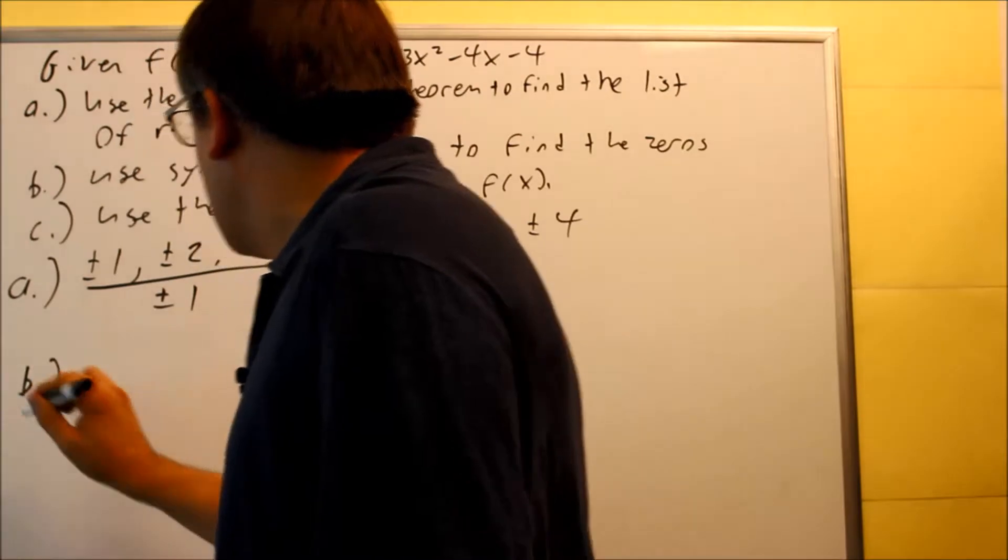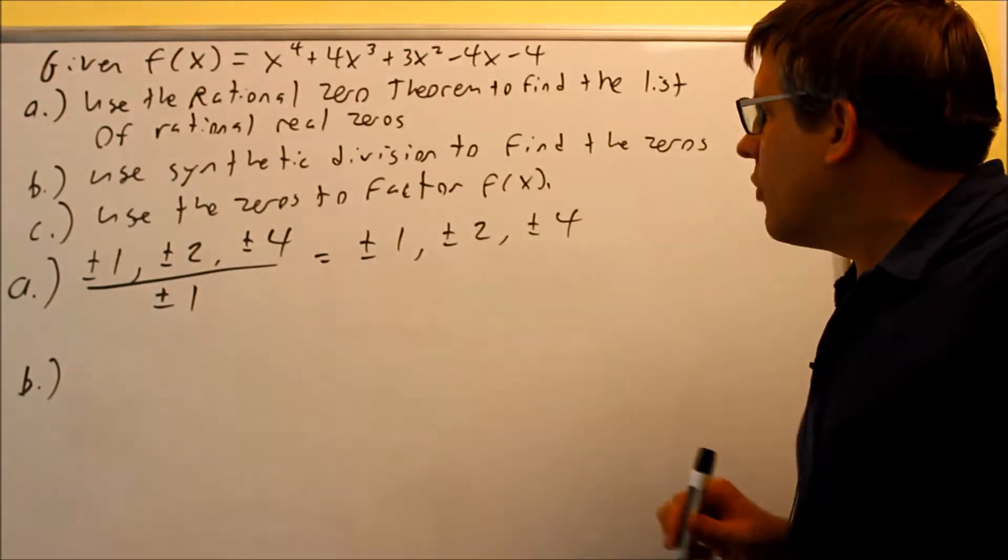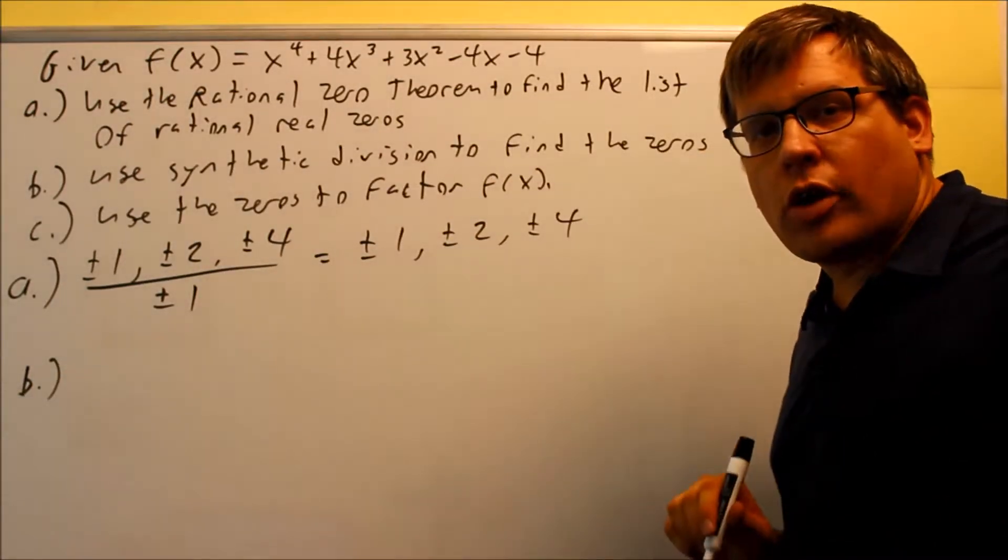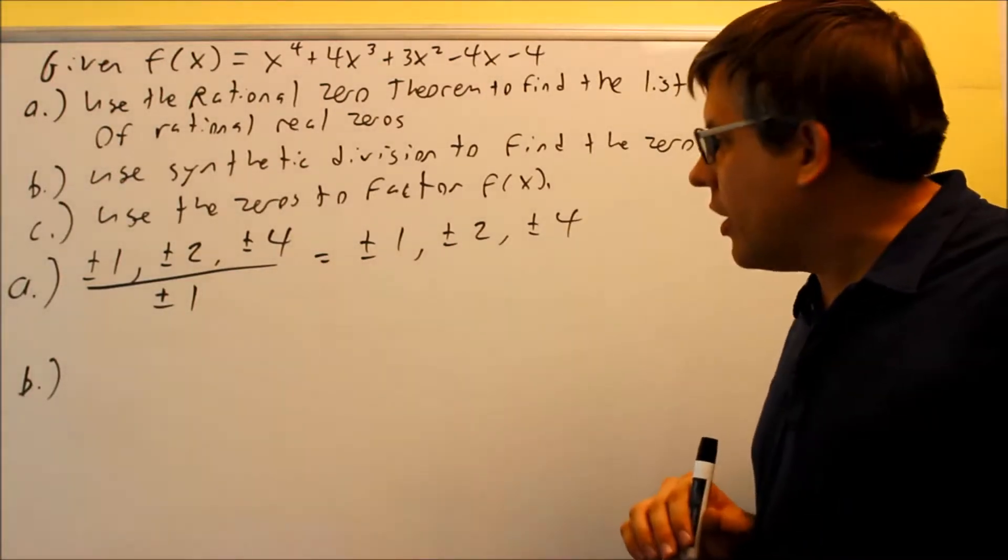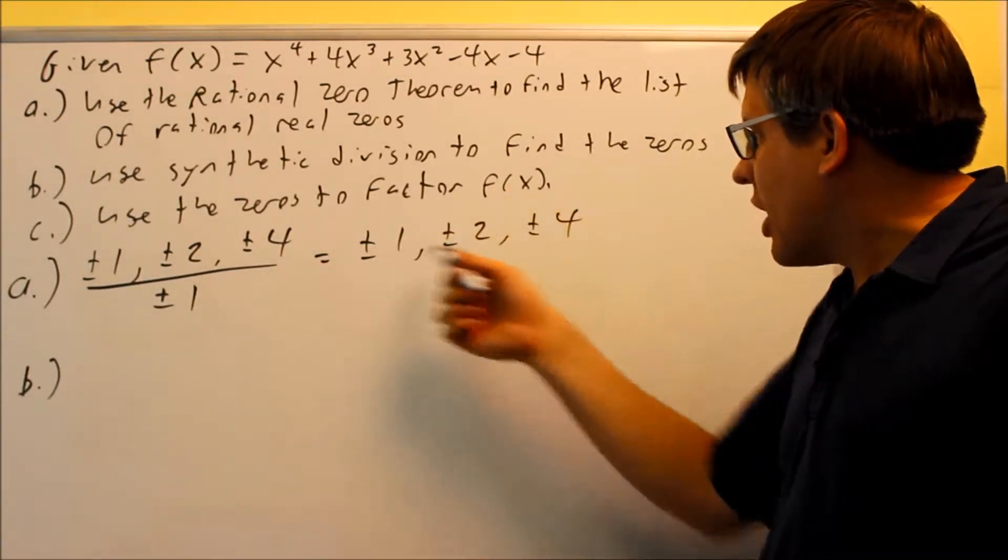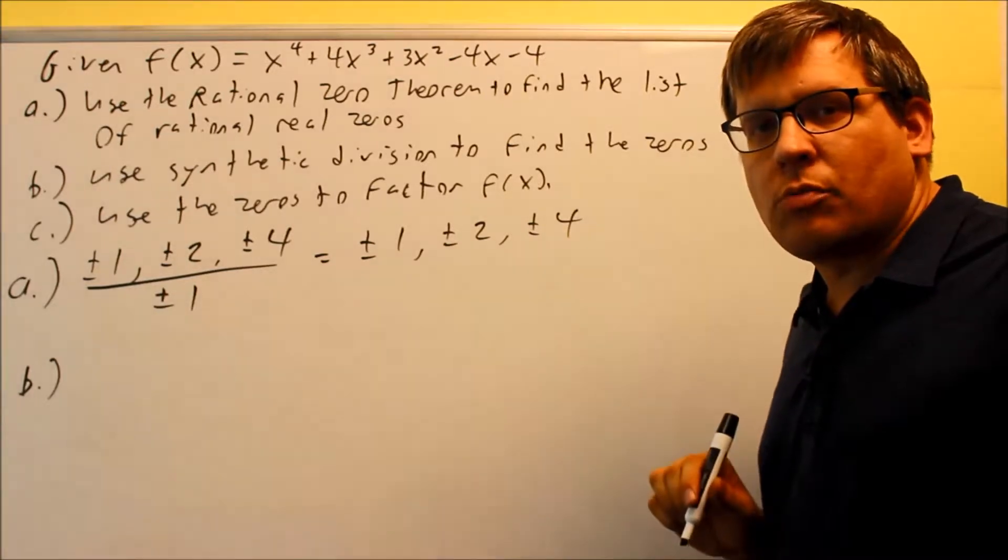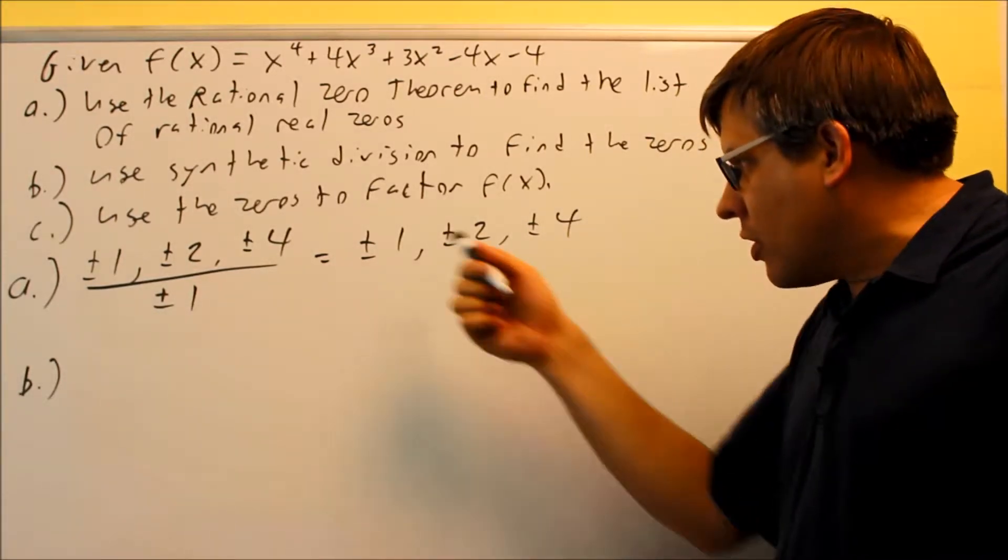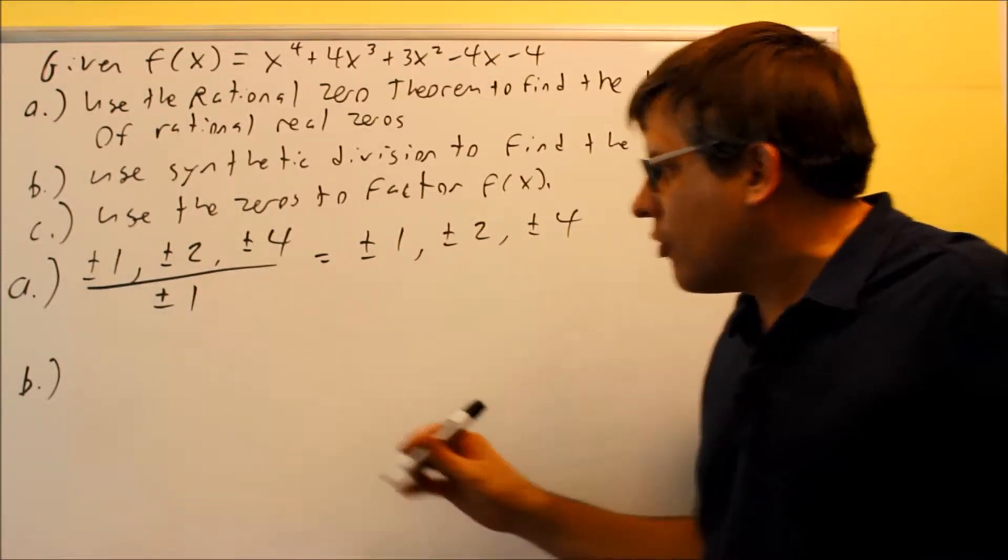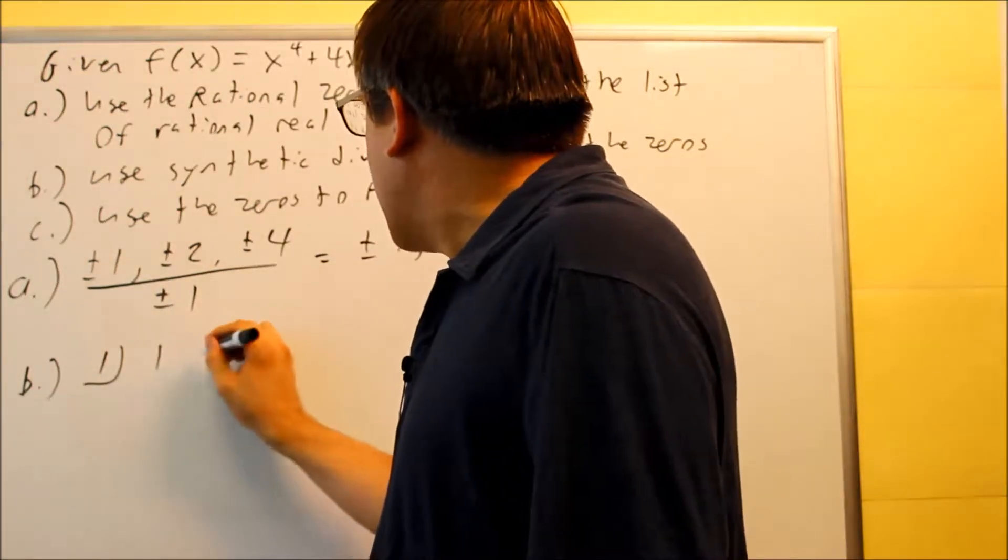Now for part B, we're using the synthetic division to find the zeros. So this is where you want to use a graphing program or if you want to use trial and error. Since this list is actually pretty small, we could actually do this one by trial and error. So therefore, you would start with the first one. I would start with one. And I would do synthetic with that.